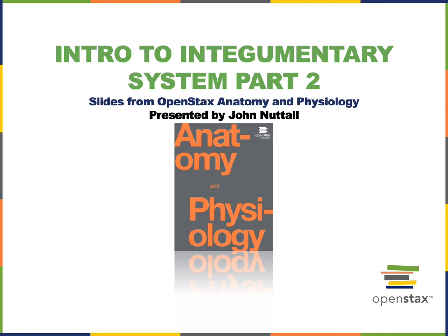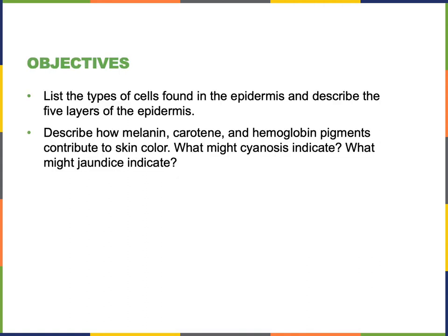This video will cover part two of an introduction to the integumentary system. We will cover the following objectives: list the types of cells found in the epidermis, describe the five layers of the epidermis, describe how melanin, carotene, and hemoglobin pigments contribute to skin color, what might cyanosis indicate, and what might jaundice indicate.